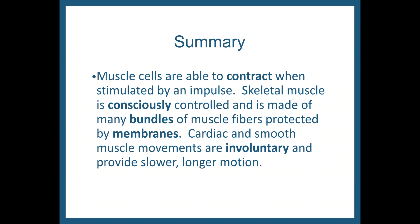To sum up: muscle cells are able to contract when stimulated by an impulse. Skeletal muscle is consciously controlled and is made of many bundles of muscle fibers protected by membranes. Cardiac and smooth muscle movements are involuntary and they provide slower, longer motion.